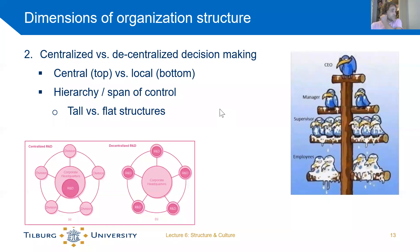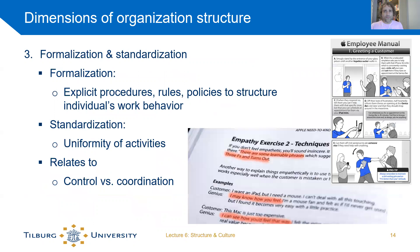The third dimension is formalization and standardization — how well-defined the job is. This is also often called control versus coordination. Control means it's really determined what every employee should do; coordination means you have flexibility in how to do your work. It relates to the previous dimension but is also different — you can have a decentralized organization that still has a high degree of formalization.